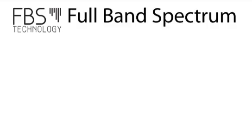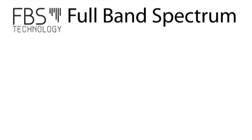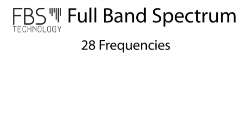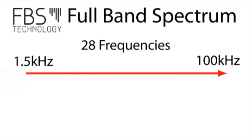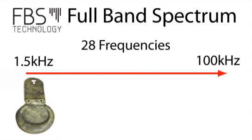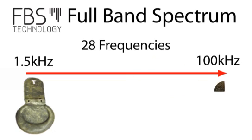FBS stands for Full Band Spectrum. This means that the e-Track simultaneously transmits and receives 28 different frequencies, ranging from 1.5 kHz through to 100 kHz. This is important because large deep targets are most sensitive to low frequencies, while small targets closer to the surface are sensitive to high frequencies. By simultaneously transmitting and receiving across the full band of frequencies, the e-Track has high sensitivity and great detection depth.